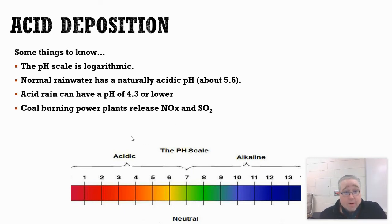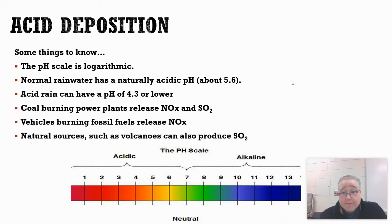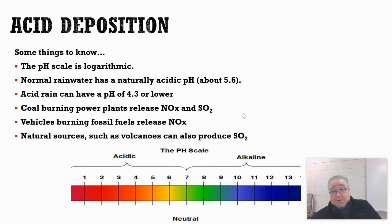A couple of things to remember: coal-burning power plants release NOx and SO2 — those are two major contributors to acid deposition. Motor vehicles burn fossil fuels and also produce NOx, which contributes to acid rain. There are also some natural sources; one that comes to mind is volcanoes. Volcanoes naturally erupt and produce tremendous amounts of SO2, which can turn into acid rain.